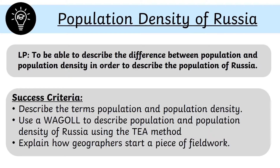This lesson looks at the population density of Russia. The learning purpose is to be able to describe the terms population and population density in order to describe what the population of Russia is like. We are going to describe the terms population and population density, use a WAGOLL — otherwise known as a 'what a good one looks like' — to describe population and population density of Russia using the TEA method, and explain how geographers start a piece of fieldwork surrounding population.